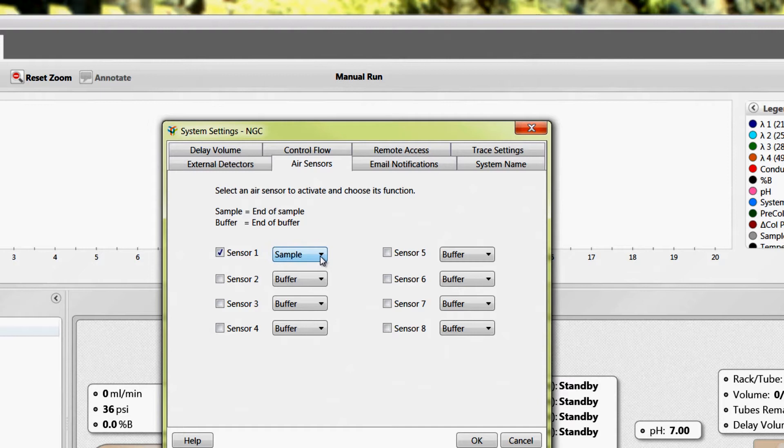Designate which air sensors will be used to detect end of sample or end of buffer. Be sure to check the box next to each air sensor you wish to be active. Air sensors designated as detecting end of buffer will stop the NGC system pumps when triggered.